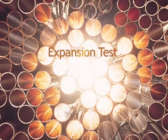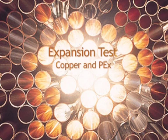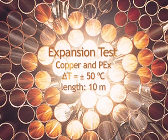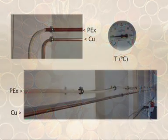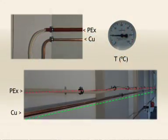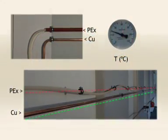The final test is the expansion test. By warming up the circulating water with 50 degrees Celsius the pipes will expand. The length of this copper tube is 10 meters. In this test we will compare copper with polyethylene.